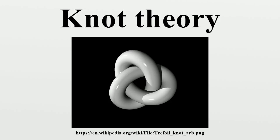A knot is prime if it is non-trivial and cannot be written as the knot sum of two non-trivial knots. A knot that can be written as such a sum is composite. There is a prime decomposition for knots, analogous to prime and composite numbers. For oriented knots, this decomposition is also unique. Higher-dimensional knots can also be added, but there are some differences: while you cannot form the unknot in three dimensions by adding two non-trivial knots, you can in higher dimensions, at least when one considers smooth knots in codimension at least three.